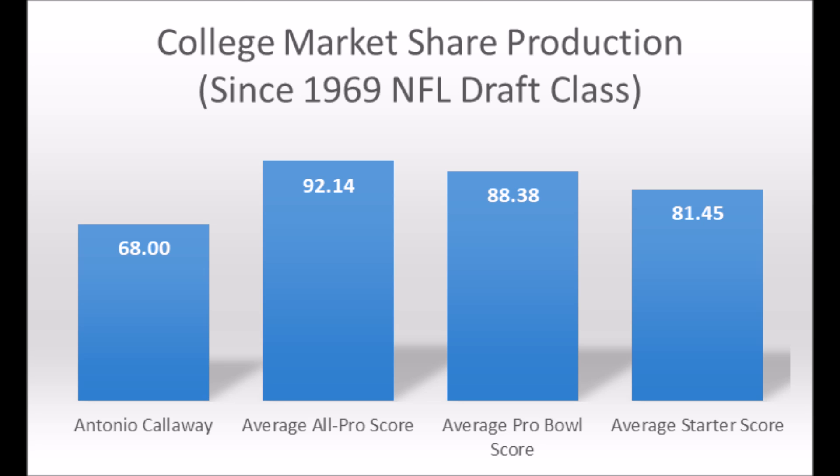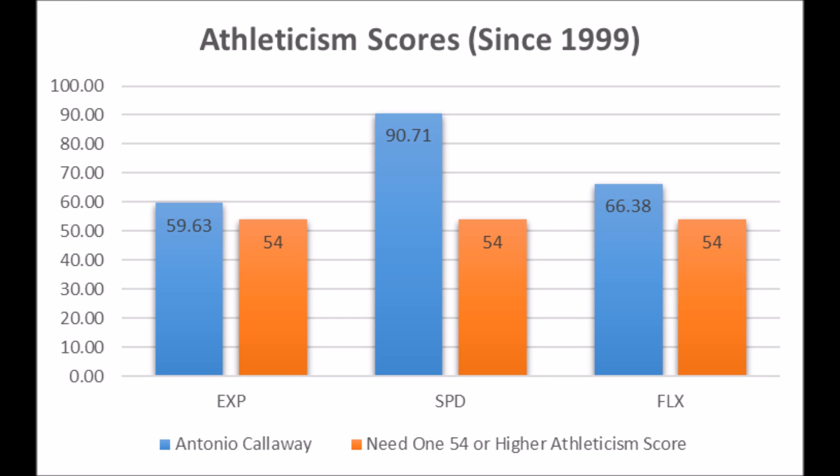Callaway's athleticism testing is solid: 59.63 explosive lower body strength, 90.71 speed score, and 66.38 flexibility — definitely has all-pro to Pro Bowl potential athletically. But for wide receivers, production wins out more than athleticism. There are many wide receivers who were elite athletes but didn't produce and didn't become anything at the NFL level. Callaway looks more like a really athletic guy who just didn't put it together at the college level, and the overall issues with him suggest that probably won't change at the NFL level either.